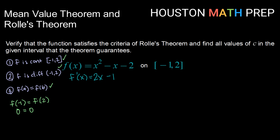Rolle's theorem guarantees there is at least one place where f prime of c, so 2c minus 1, equals 0. Solving for c: 2c equals 1, so c equals 1 half. That's our value on the interval negative 1 to 2 where we will have a parallel tangent line to our secant line. That does it for this video on mean value theorem and Rolle's theorem. We'll catch you in the next one.